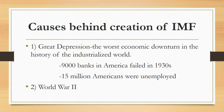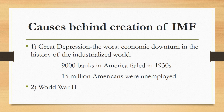Over the next several years, consumer spending and investment dropped, causing a steep decline in industrial output and employment as failing companies laid off workers. By 1933, when the Great Depression reached its lowest point, some 15 million Americans were unemployed and nearly half the country's banks had failed. About 9,000 banks in America failed in the 1930s and shut down their operations, because Americans went to withdraw their money but banks had lost everything due to the stock market crash.